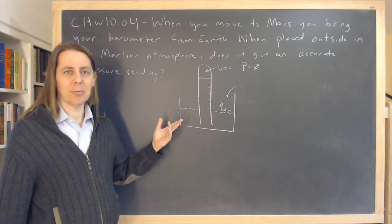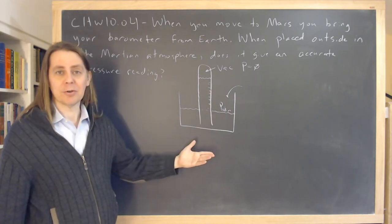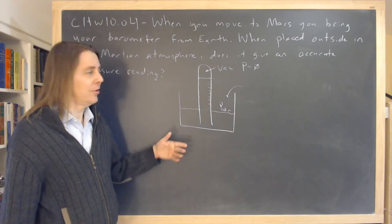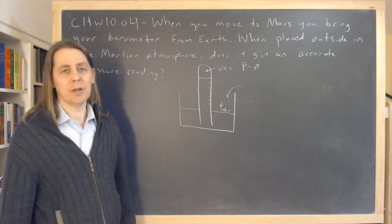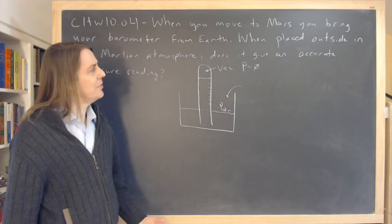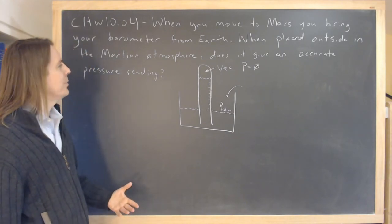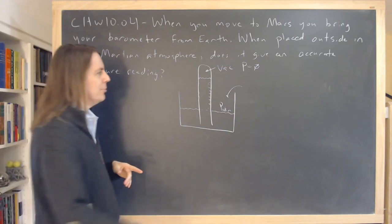because it doesn't care about the atmospheric pressure, it just is an absolute pressure measurement, and therefore, you know, on Earth it might be way up here and on Mars it's going to come way down. So you might say yes. But then let's read it again: does it give an accurate pressure reading? It actually wouldn't be accurate because